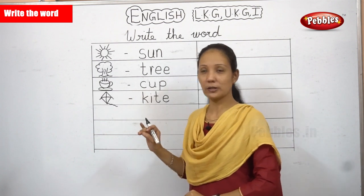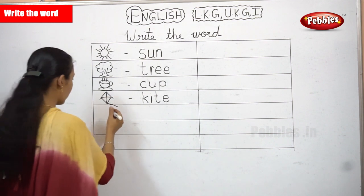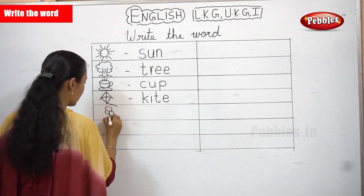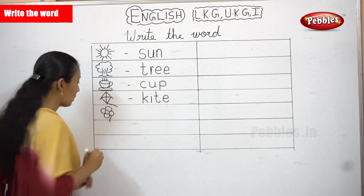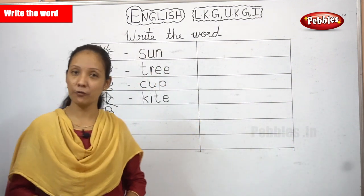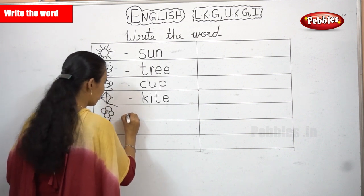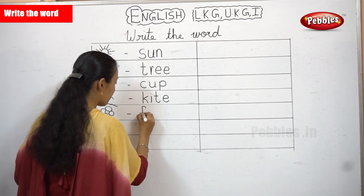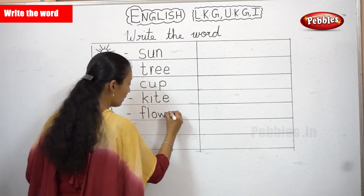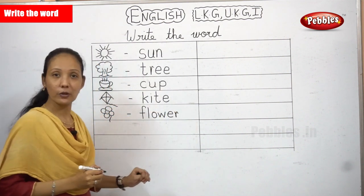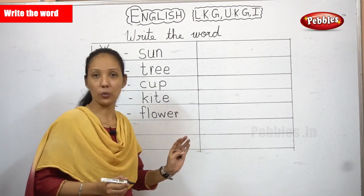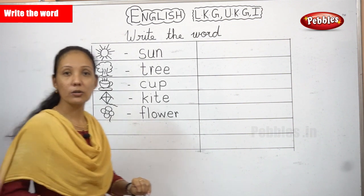You can also draw your own pictures. After drawing kite, shall we go to the next one? I am drawing a small circle. What picture is this? It's a flower. Shall we write the spelling for flower? Your spelling for flower is F-L-O-W-E-R. Flower. You have finished five words. Shall we go on to the next word?